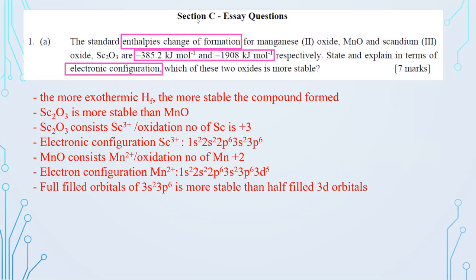To summarize part 1a: when you see such a question in an examination, write out the oxidation state, the electronic configuration, and explain why one is more stable than the other based on electronic configuration principles.